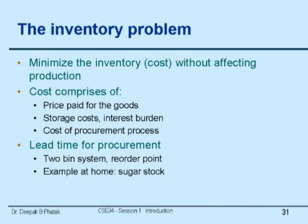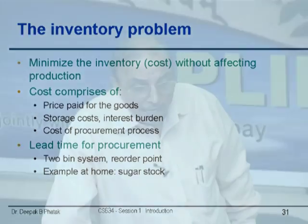Here is an example of simple inventory control. The cost of inventory comprises the price paid for the goods, storage cost, interest burden, and cost of the procurement process — there is no free lunch. If I have to purchase 500 fan belts, I have to ask 3 or 4 vendors, write letters to them; my time is consumed. All that adds to procurement cost. Lead time for procurement is the average time by which I will get that item. If the lead time is 10 days, I would order roughly when about 11 days of stock remains, so I don't waste money storing unnecessary things. But if I goof up, my production will halt — it's like a tightrope walk for inventory control.